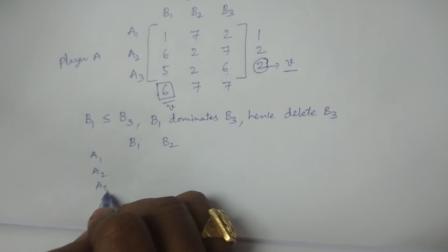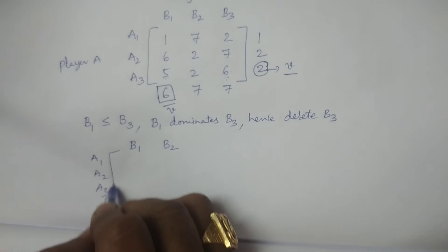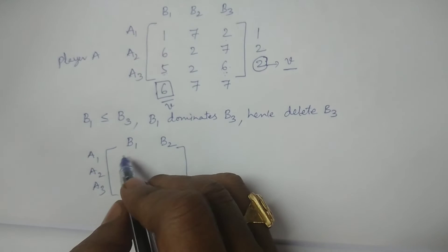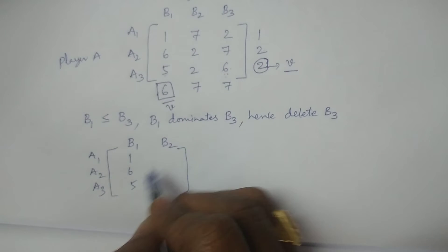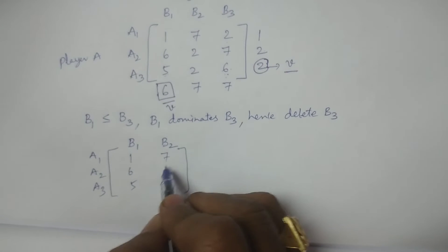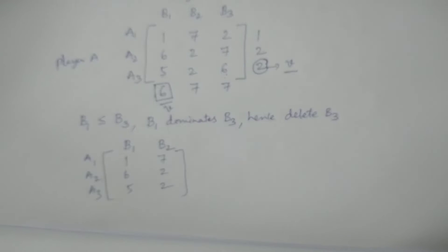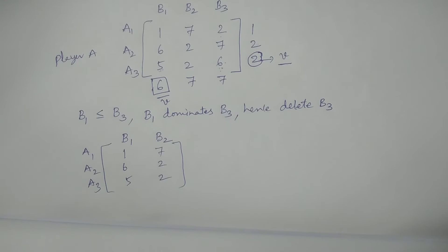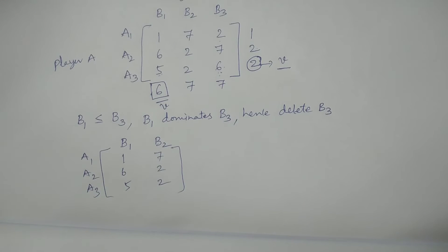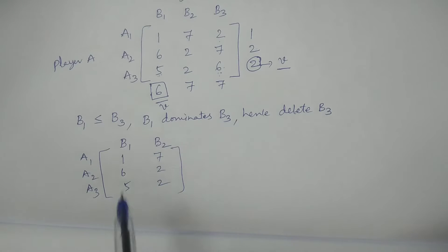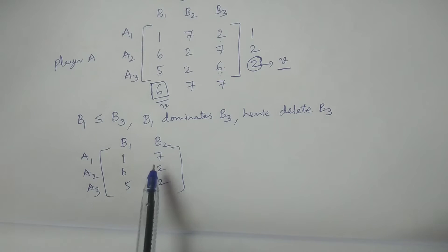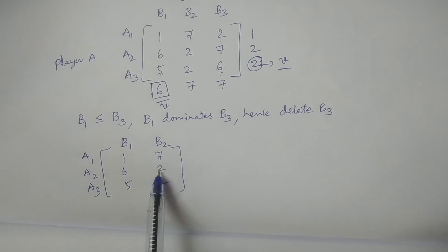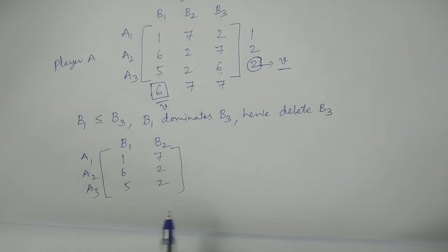Now with strategies A1, A2, A3 remaining for Player A, the reduced payoff matrix has values 1, 6, 5 and 7, 2, 2. We apply the main dominance property, comparing rows: for Player A, 7 is greater than 1, 2 is less than 6.